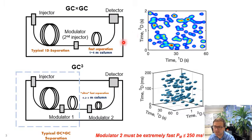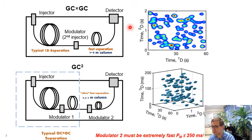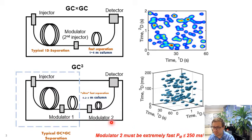Instrumentally, GC Cubed can be thought of as an extension to an existing GC×GC platform, consisting simply of an additional modulator and an additional short separation column. Since GC×GC peaks on the second dimension are on the order of a few hundred milliseconds, the second modulator in a GC Cubed instrument needs to operate at an ultrafast modulation period of roughly 250 milliseconds or less. The resulting data, which is reshaped, can be viewed in its natural 3D dimensionality as an isosurface chromatogram, as shown here.